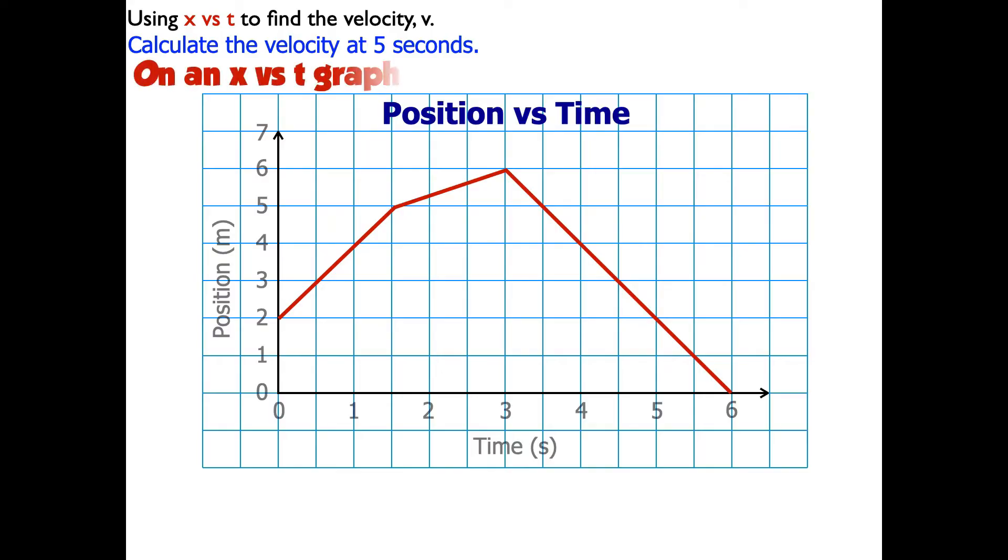So what I know from physics is that on a position versus time graph, the slope is the velocity. So really in math terms, what this question is asking me to do is to calculate the slope at 5 seconds.